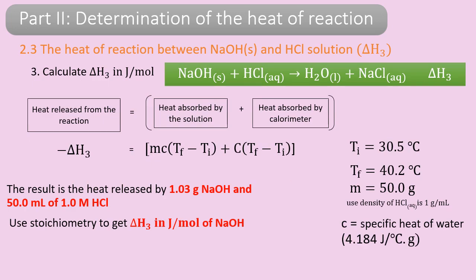Put everything into the calculation — same pattern. The heat released from the reaction goes into the solution and the calorimeter. Ti is 30.5 degrees Celsius, Tf is 40.2 degrees Celsius, and the mass of the hydrochloric acid solution is 50 grams. Delta H3 here is for this amount of sodium hydroxide and this amount of hydrochloric acid. Find what delta H3 is in joules per mole of sodium hydroxide.